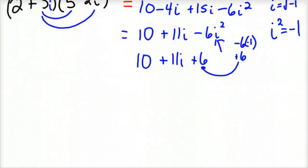So there's one more. Then we can add the 10 and the 6. So when you multiply those two complex numbers, you'd get 16 plus 11i. And so there is addition, subtraction, and multiplication.